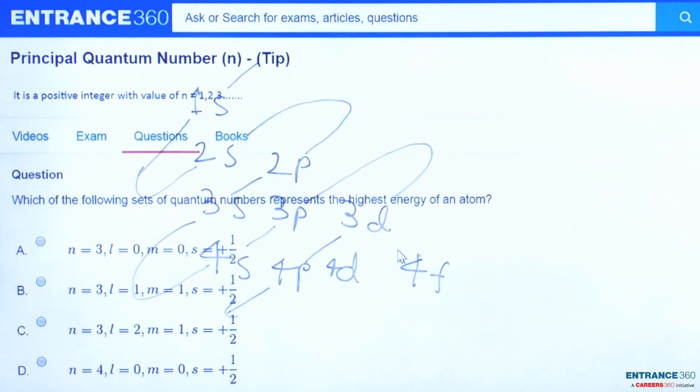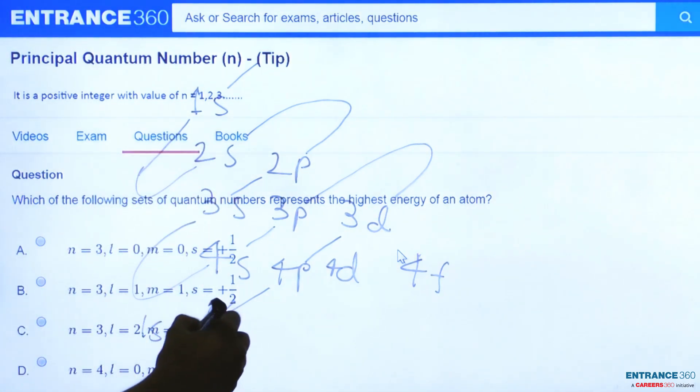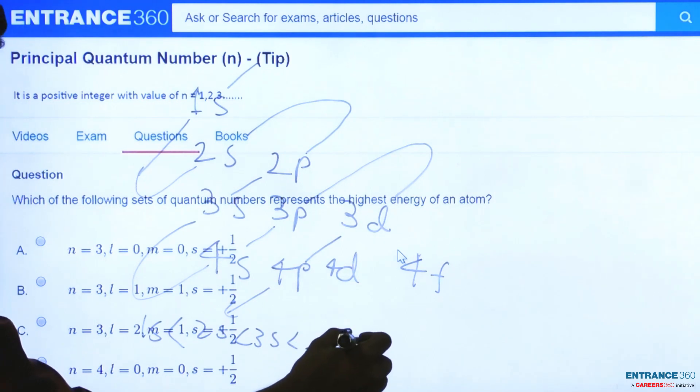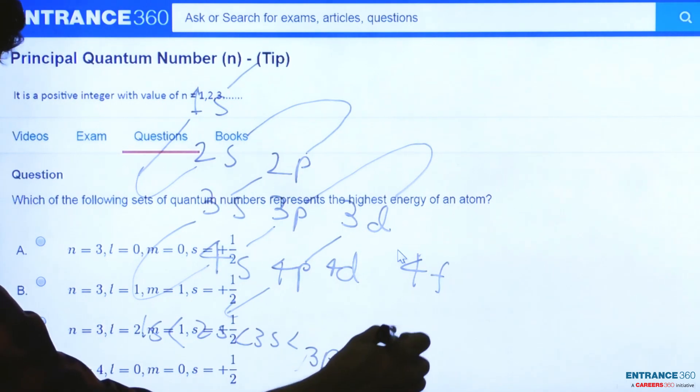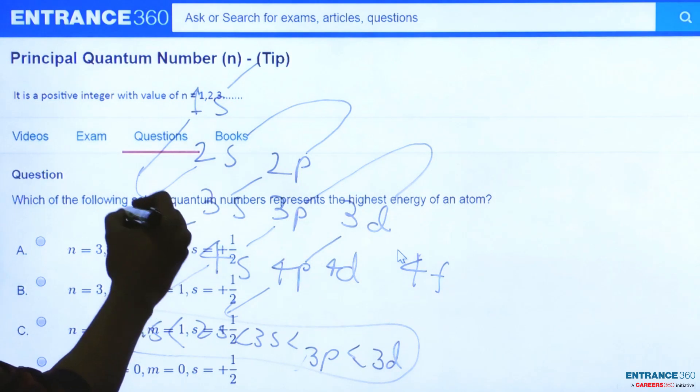That's how we do the electronic configuration of an atom. The order of energy will be 1s has the lowest energy, then 2s, then 3s, then 3p, then 4s, then 3d. So this will be the order of energy. From the given options we will conclude that only C option is correct, which has 3d orbital.